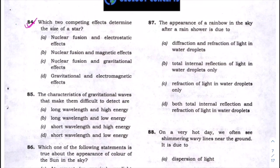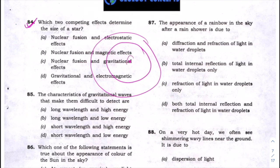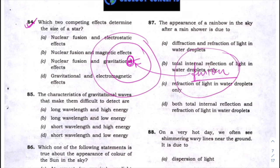To understand this question, you need to understand the life cycle of a star. A star forms when dust collects at a place — this is the birth of a star. It starts growing, and the energy it gets comes from nuclear fusion, the same process that happens in the sun. Through this process, a star gets energy.